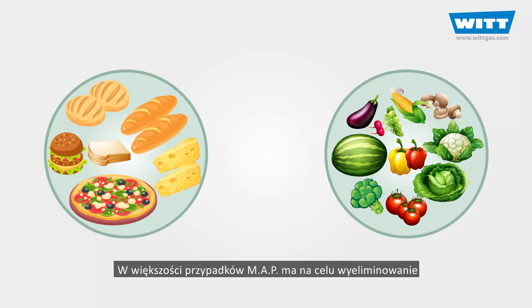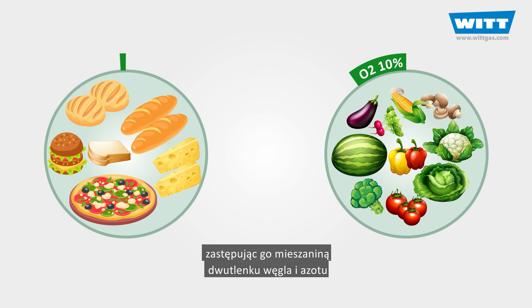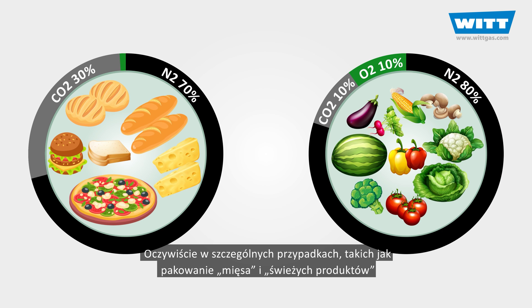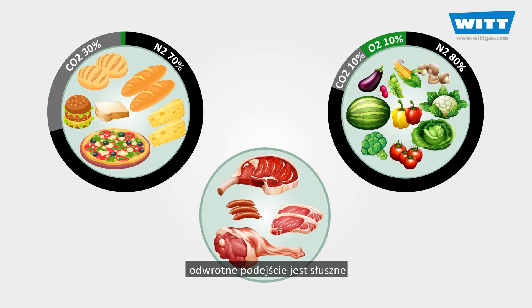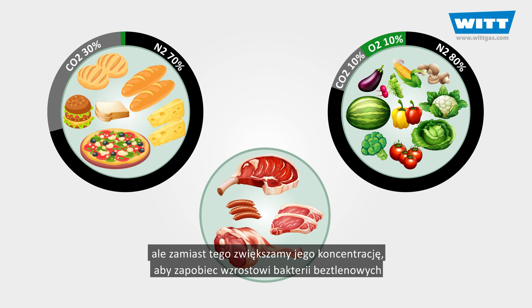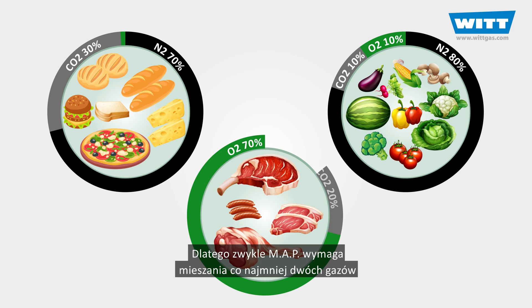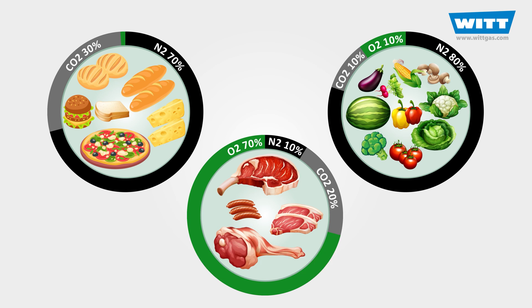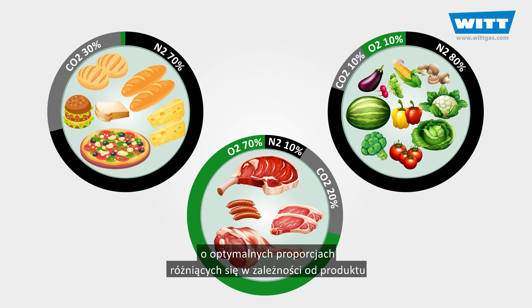In most cases, MAP is aimed at eliminating or reducing oxygen inside the packaging and replacing it with a mixture of carbon dioxide and nitrogen. Of course, in special cases such as packing red meat and fresh produce, the opposite is correct — we do not eliminate the oxygen but instead increase its concentration to prevent anaerobic growth. MAP therefore normally requires a mixture of at least two gases, and the optimum proportions vary from product to product.